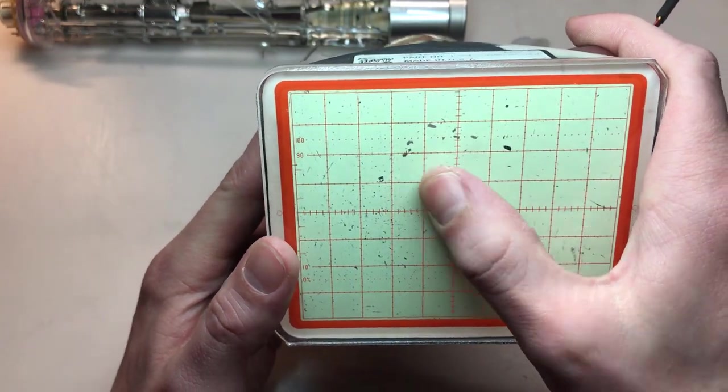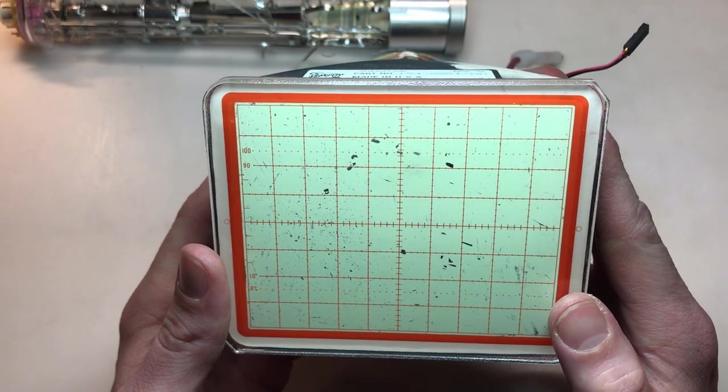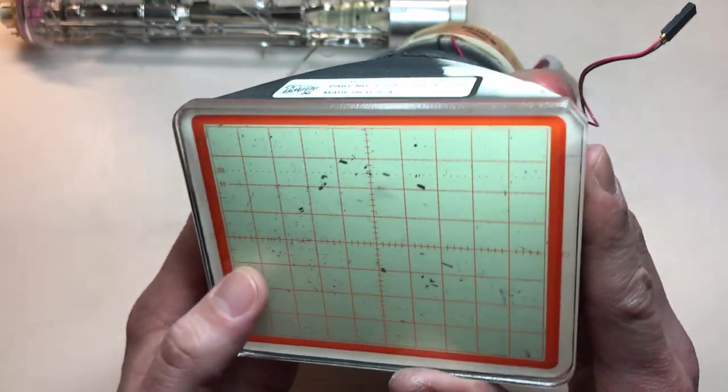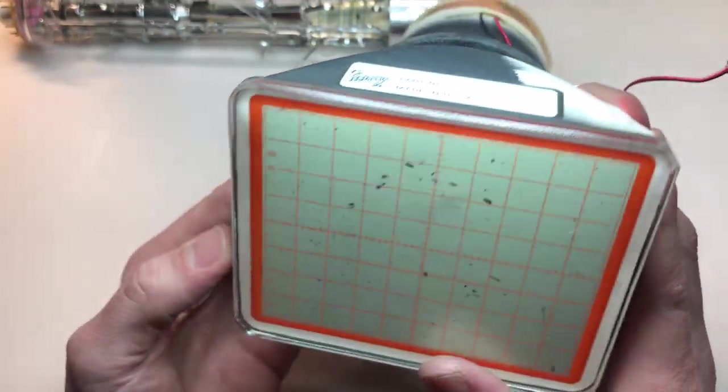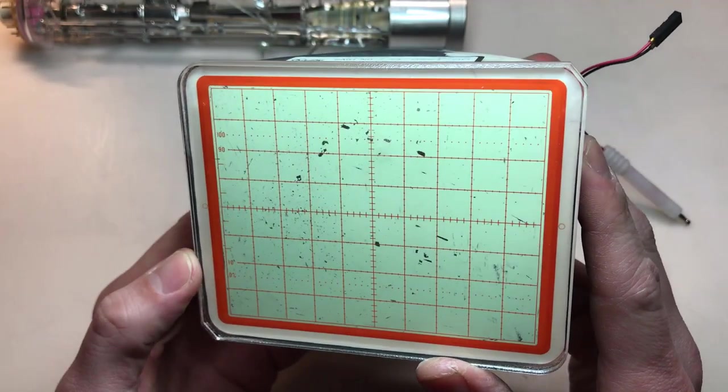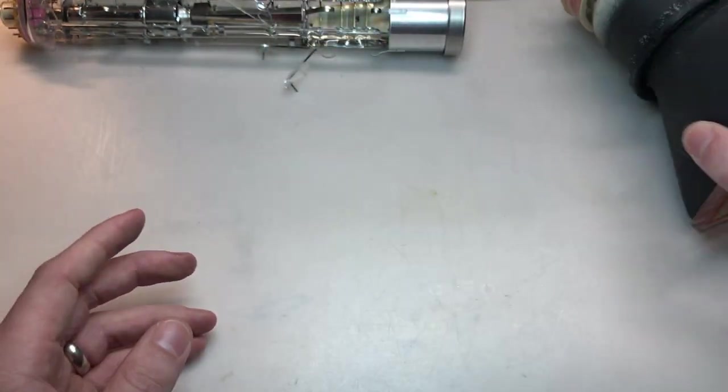So what happened was, when this thing imploded, a bunch of the shards of glass scraped off some of the phosphor, the internal phosphor coating on the screen. And so even if the screen was usable, which obviously it never will be again, you'd have all these really ugly defects that would make it unappealing to visualize. So that's the CRT.